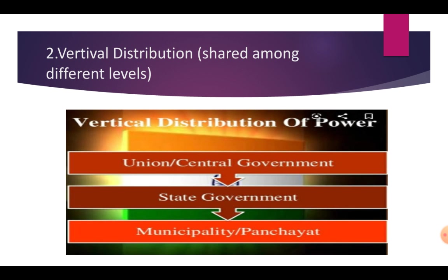Vertical distribution में there are three types. First is local government — in cities there are municipalities and in villages there are panchayats. Second level is state government. Third is union or central government. इस distribution को हम vertical distribution कहते हैं.